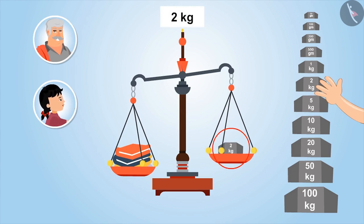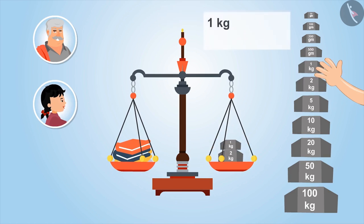Oh, this is still on the upper side. Means, I have to add some more weighing stones. Let's add one more stone of 1 kg to it. Means, now it becomes 2 and 1, 3 kgs.